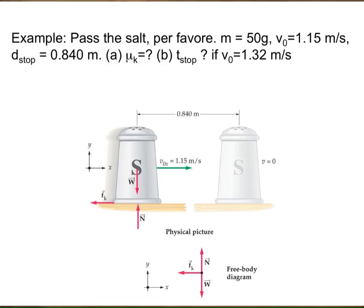How do we find it? The problem says the salt box has a mass of 50 grams and initially we throw it with a velocity of 1.50 meters per second. The salt box stops after traveling a distance of 84 centimeters. With these given values, can we find mu k? If you want to find mu k and the object stops, it must have a constant deceleration — a negative acceleration.